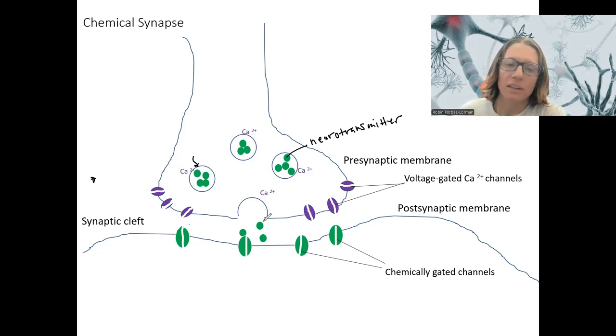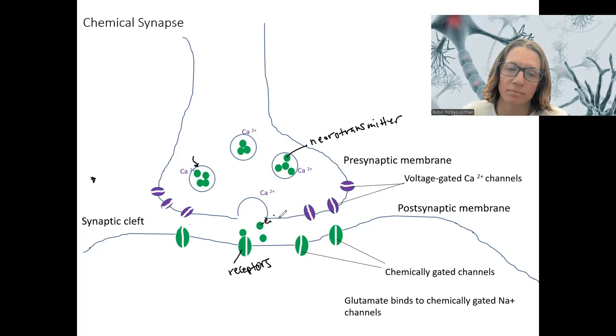When neurotransmitter binds to these receptors, it's going to cause a signal. In this case, I'm showing chemically-gated channels that are the receptors. So when this ligand bound to them, they opened and could allow an ion to pass through. So for example, glutamate is a neurotransmitter that opens chemically-gated sodium channels. So these are chemically-gated sodium channels in that case, and sodium would flow into the cell down its electrochemical gradient.